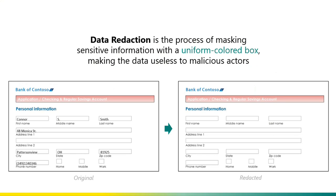Let's start with some definitions. Data Redaction is the process of masking sensitive information with a uniform colored box — it can be a uniform colored box or a background-colored box, but the result remains the same: the data becomes useless to malicious actors. On the slide, you can see Connor's PII on the left side, and on the right side it just disappears — the document no longer contains any sensitive information. It's redacted.